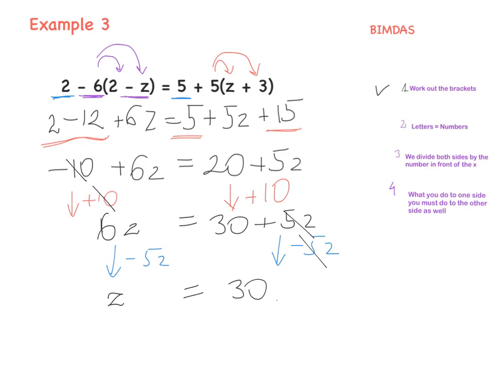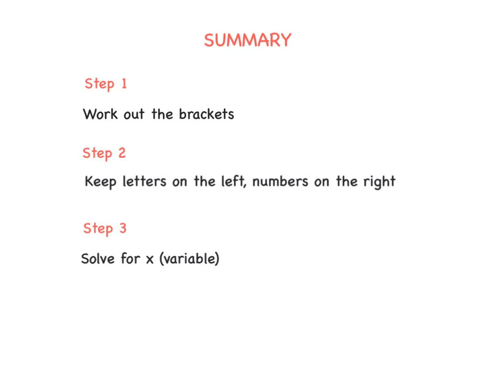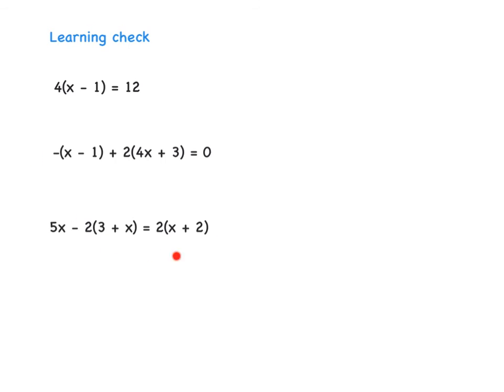Try to do it in your copy by yourself and then check with the video. For our summary, follow these simple steps. Step 1: work out the brackets first. Step 2: keep letters on the left, numbers on the right — tidy up. Step 3: solve for x, or whatever letter you have. Remember, if you have something like 3x, divide by the number in front of x at the end. And whatever you do to one side, you must do exactly the same to the other side. Try these three questions for homework, and if you have any questions, you can ask me tomorrow.